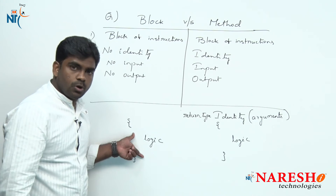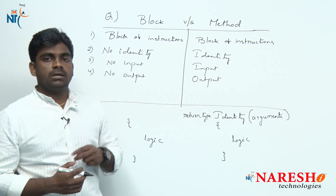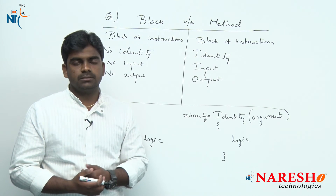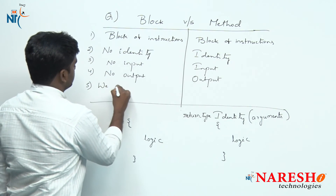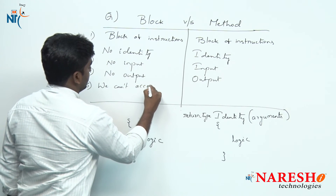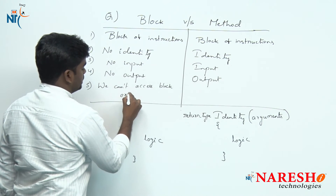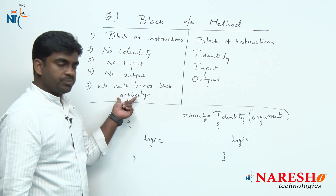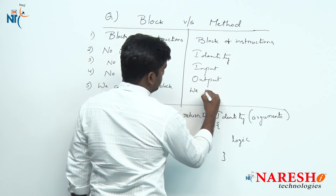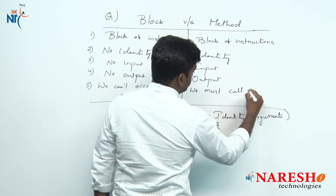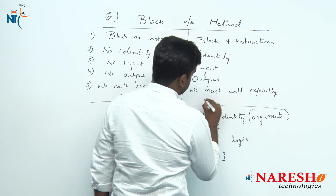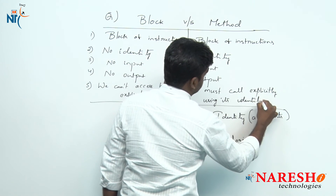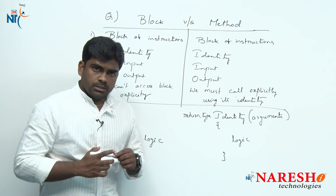The third difference: how to access a block — we cannot access any block because the identity is not there. Without identity, how can we communicate? So we cannot access a block explicitly or manually. But for a method, we must call it explicitly using its identity.